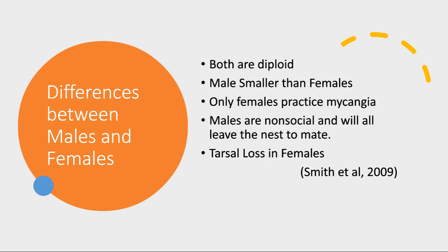Both genders are diploid. Mating has not been observed to occur in the nest, so there is no inbreeding. All but a few females that leave the nest to start their own colonies will be unmated and therefore sterile. Only the females practice mycangia, which will be discussed shortly.